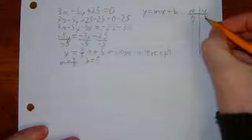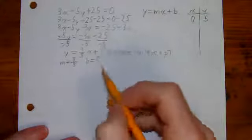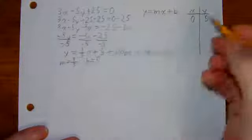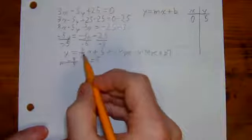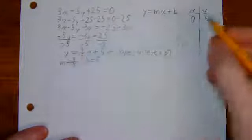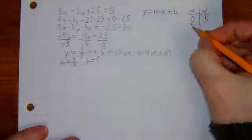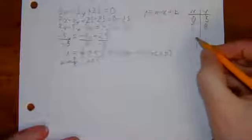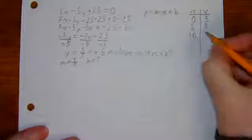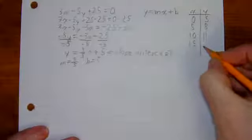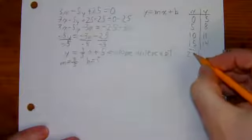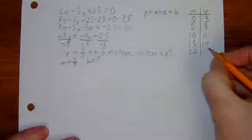We know when x is 0, y is going to be 5, because 5 is the initial value or y-intercept. And then we know it's going to go up 3 every time we go over by 5. So that means when the x goes up by 5, the y is going to go up by 3. x goes up by 5, y goes up by 3, x goes up by 5, y goes up by 3, x goes up by 5, y goes up by 3.